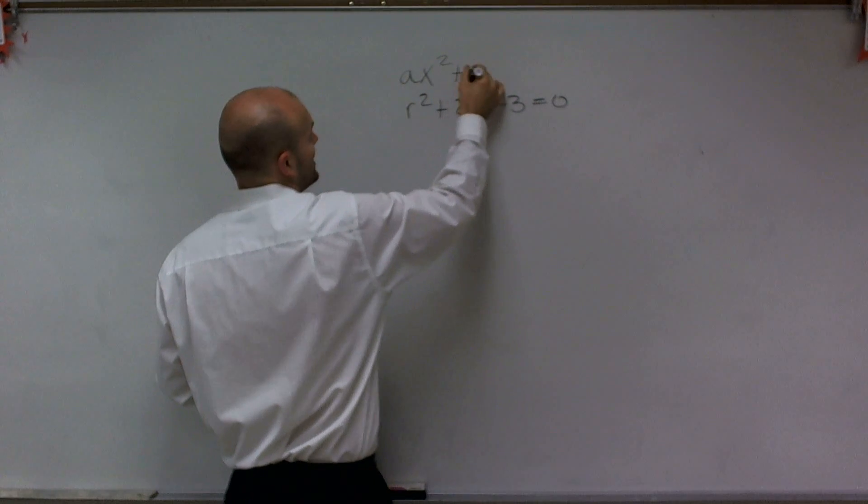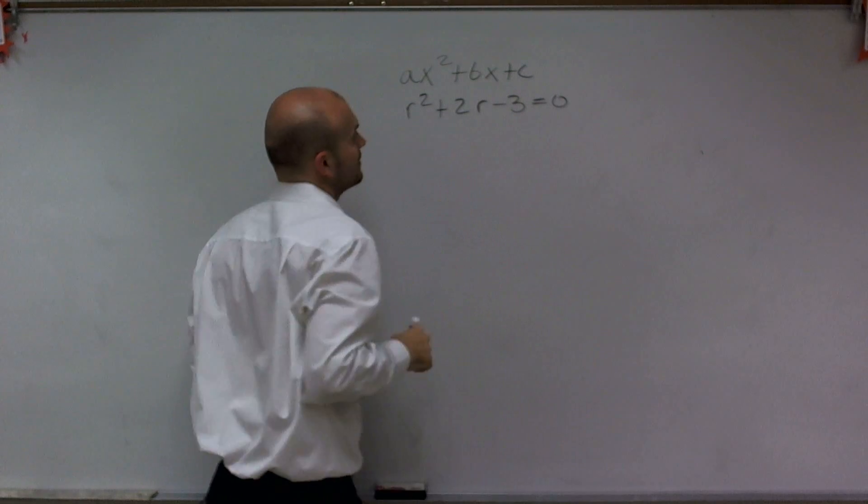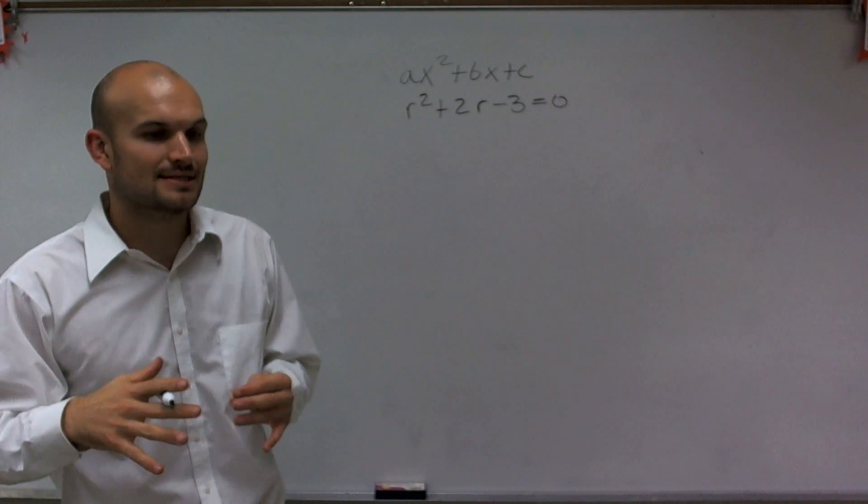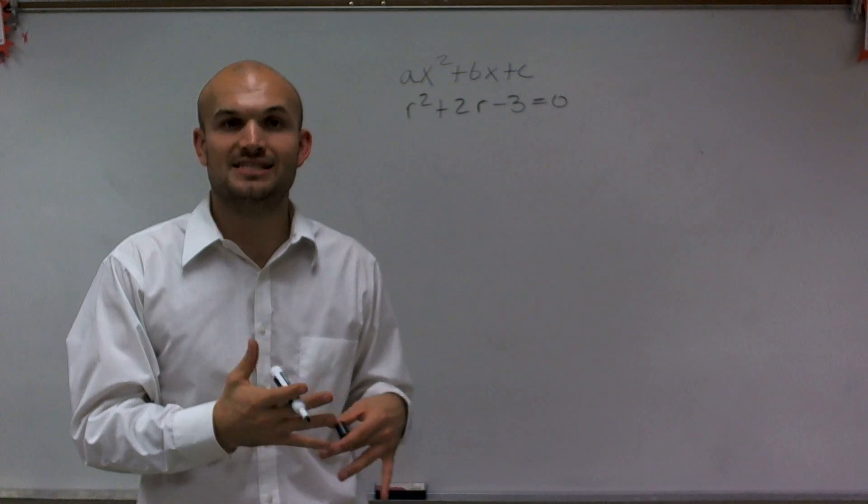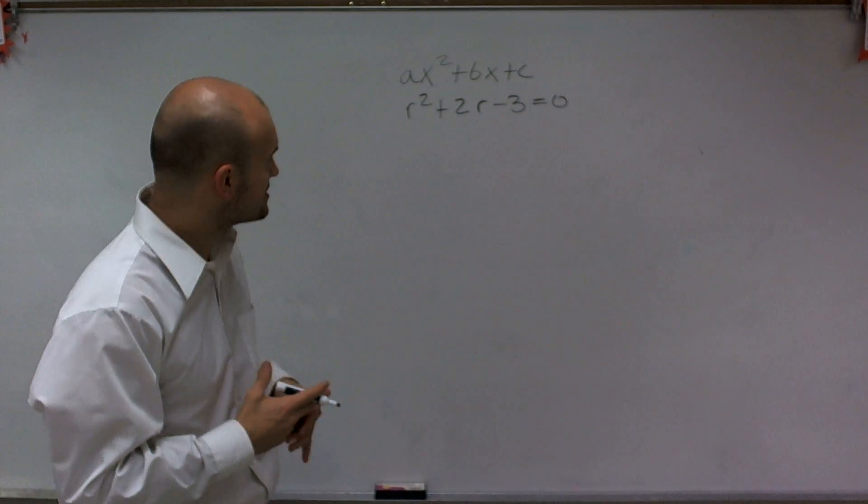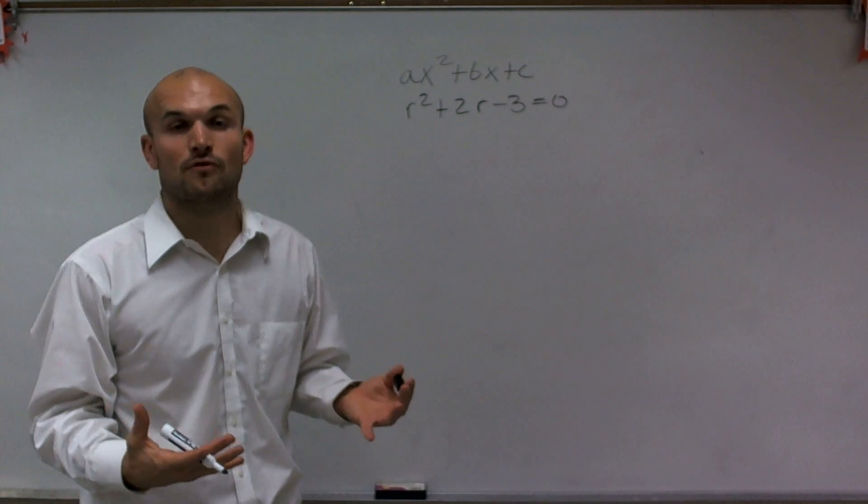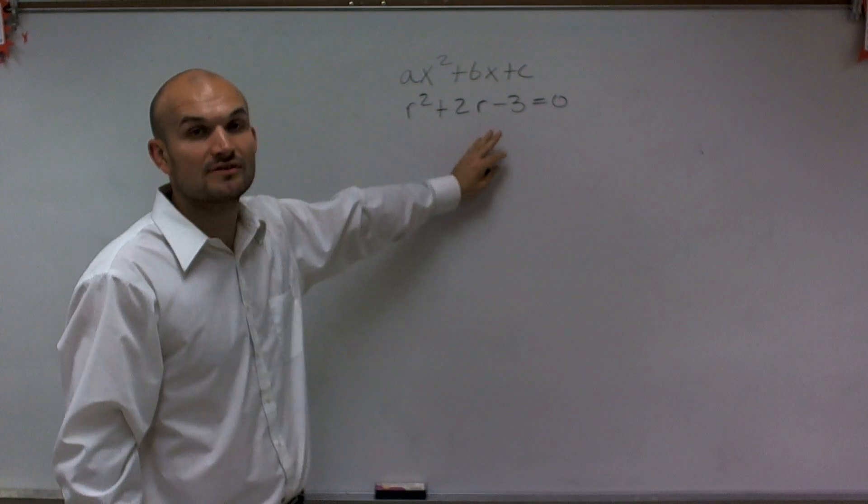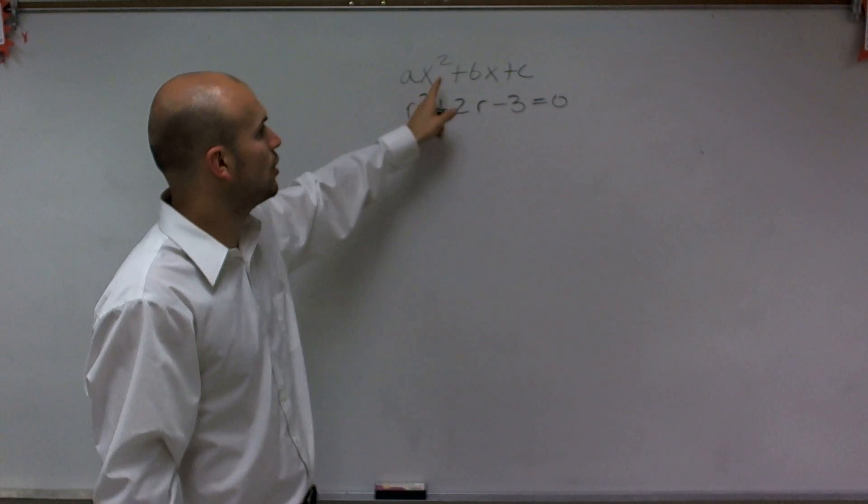And quadratic equations can be put in the form of ax squared plus bx plus c. And a lot of times, there's different little techniques to be able to solve quadratic equations. And one of them is using the quadratic formula. And the reason why we call it the quadratic formula is because it's a formula to find the values of r using the coefficients.